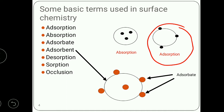Adsorbate — what is adsorbate? The gas molecule which is adsorbed on the surface of the solid is called adsorbate, and the substance on which gas molecules are adsorbed is called adsorbent.